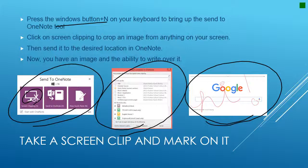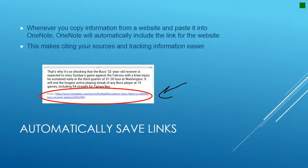If you hit the Windows button and then the N key you should get the Send to OneNote screen. You'll click on the screen clipping tool — the one that looks like a monitor with scissors — and you'll be able to draw around an image on your screen. Then a box comes up asking where you want to put it in OneNote. Once it's in OneNote you can annotate over it. When you copy info from a website and paste it into OneNote, it puts the source link right into the page, making citing your sources so much easier.